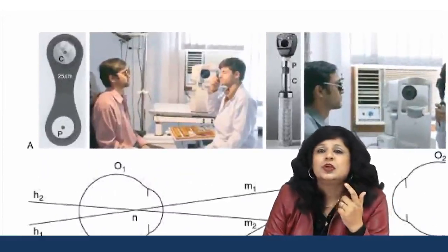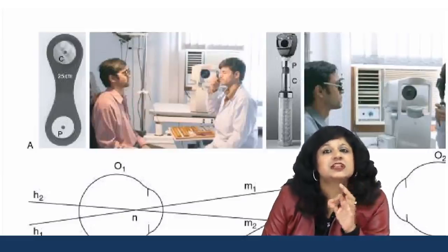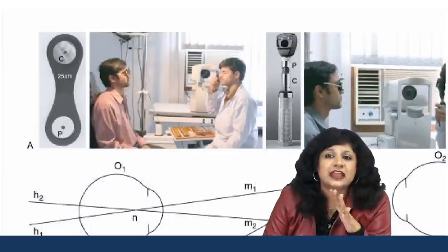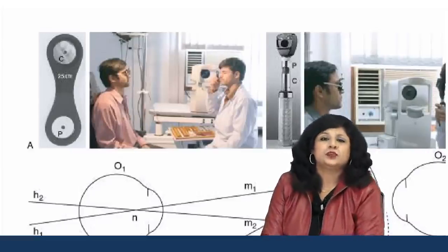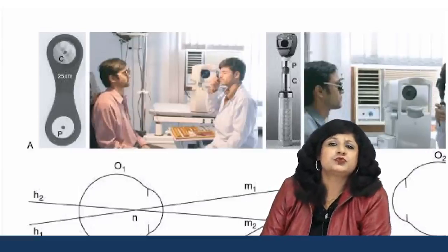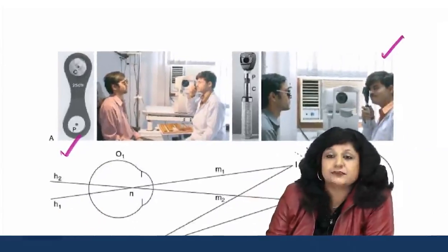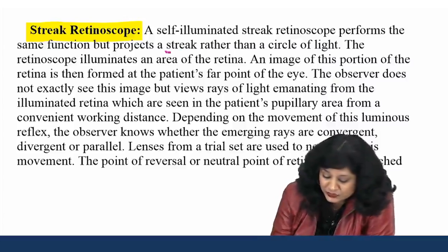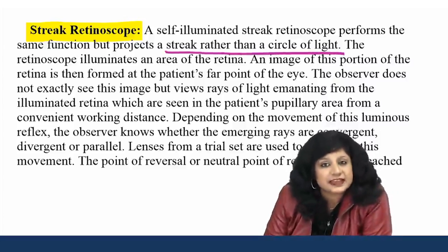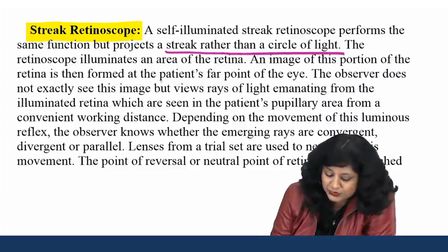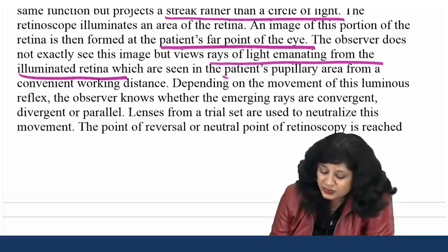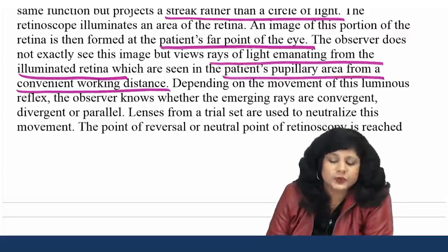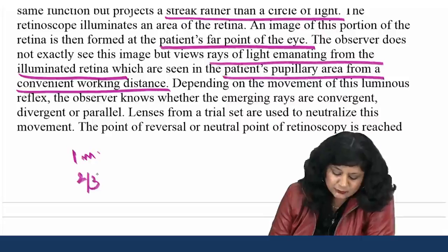At this neutralization point, the far point of the patient's eye will coincide with the location of the observer's plane, and therefore it will be equivalent to a state of myopia equal to the dioptric equivalent of the working distance. If the surgeon is 1 meter away — as retinoscopy is mostly done from 1 meter — the total optical system of the patient's eye plus lenses will equal 1 diopter of myopia. Hence the patient's refractive state will be 1 diopter less than the lenses used to neutralize the movement.